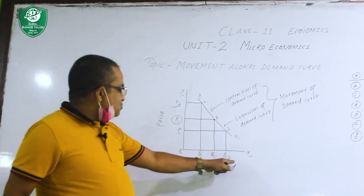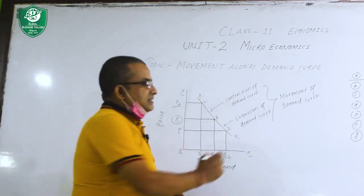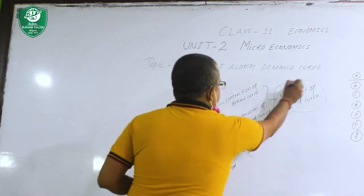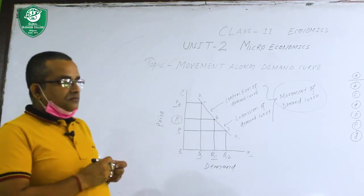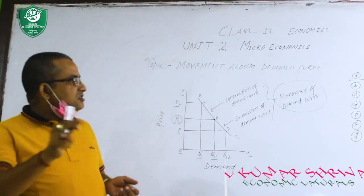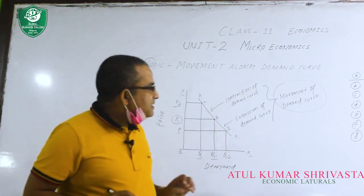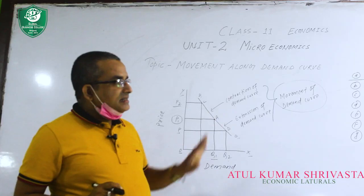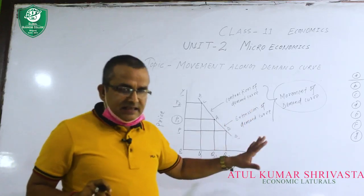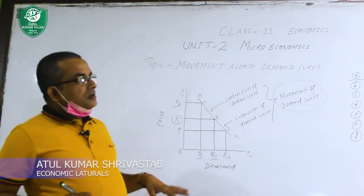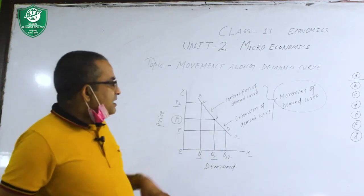Both processes together are called movement of demand curve. The movement of demand curve does not happen due to income of the consumer, taste and habits, fashion, change in population, change in advertisement, or change in prestige.